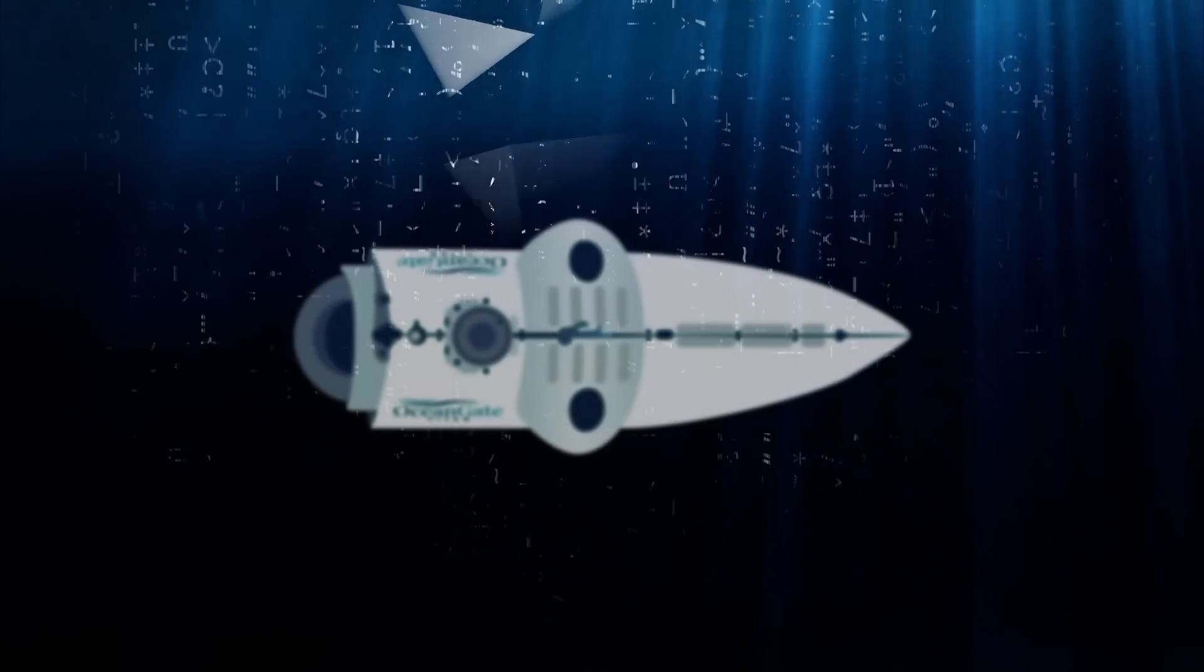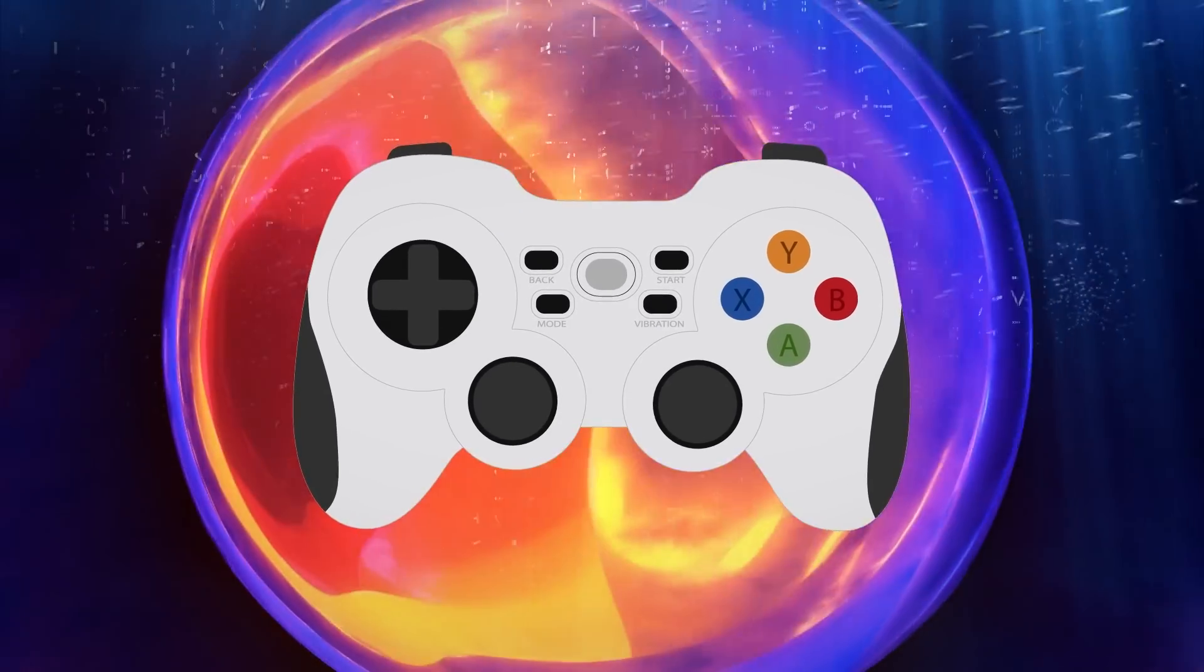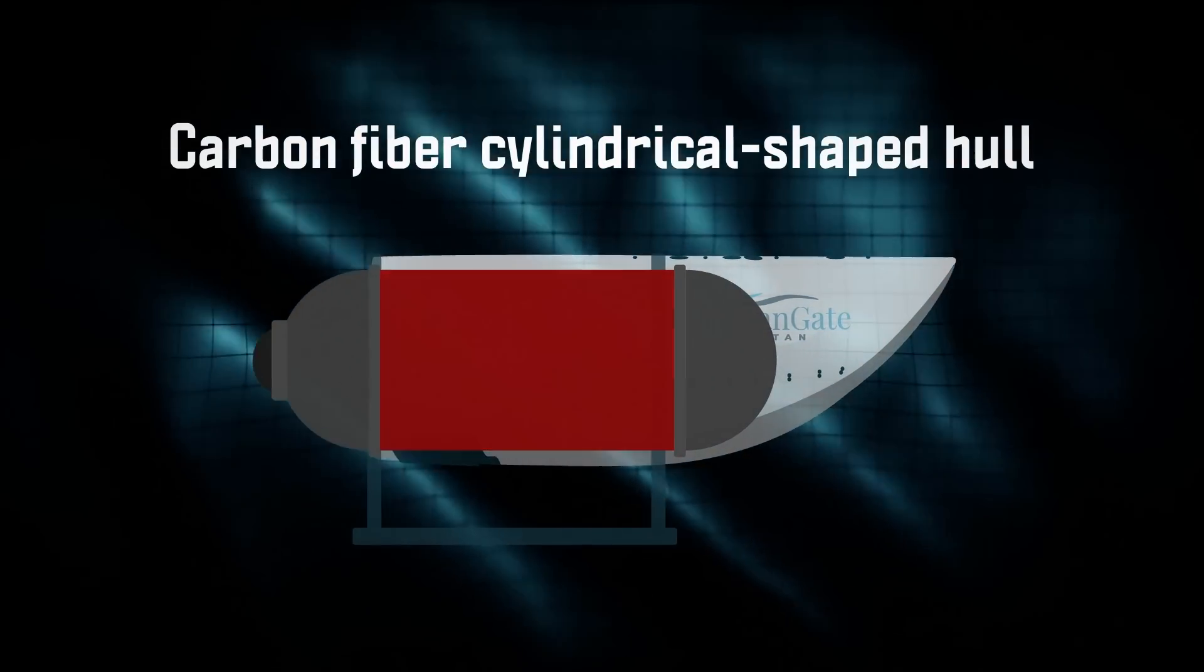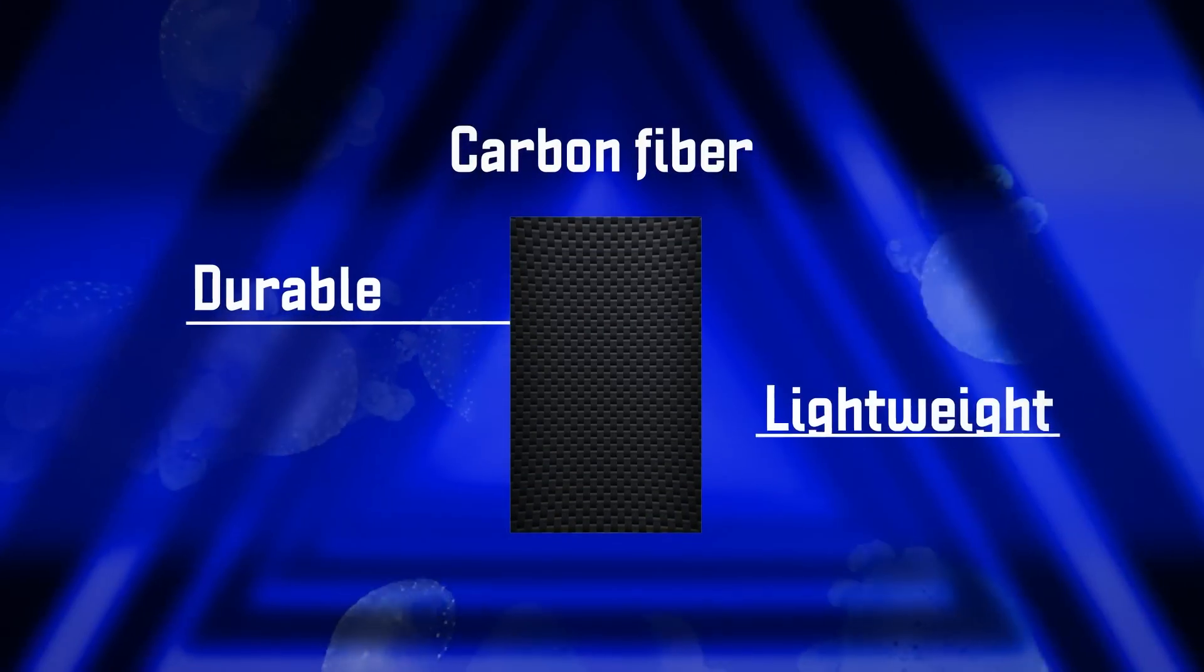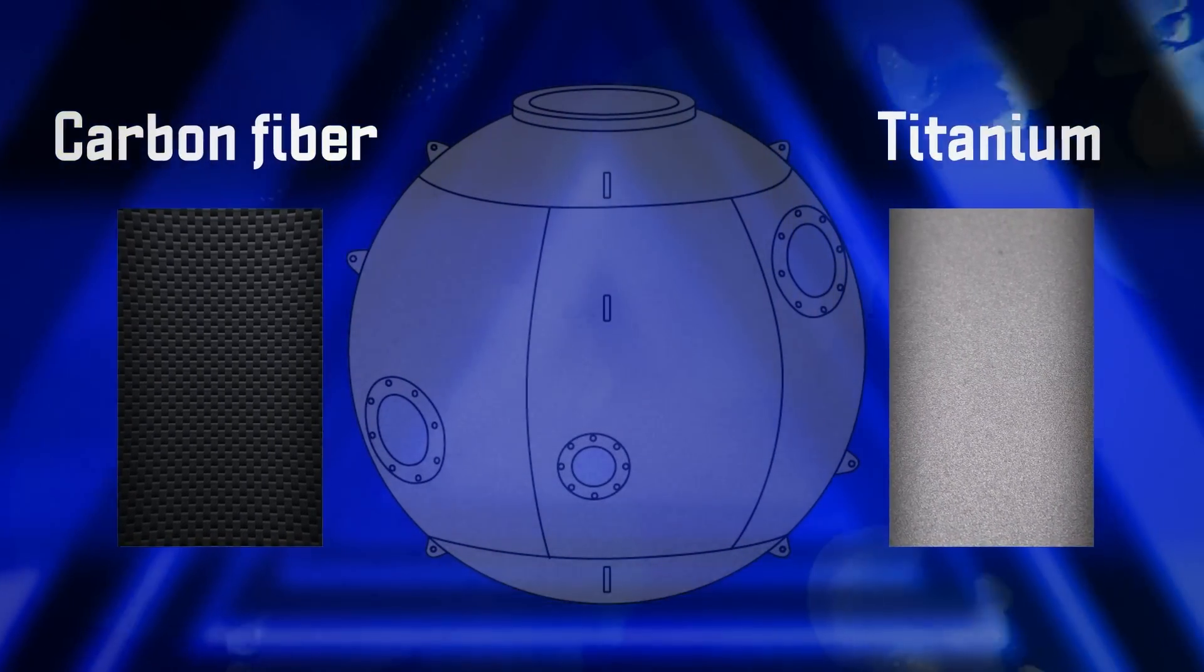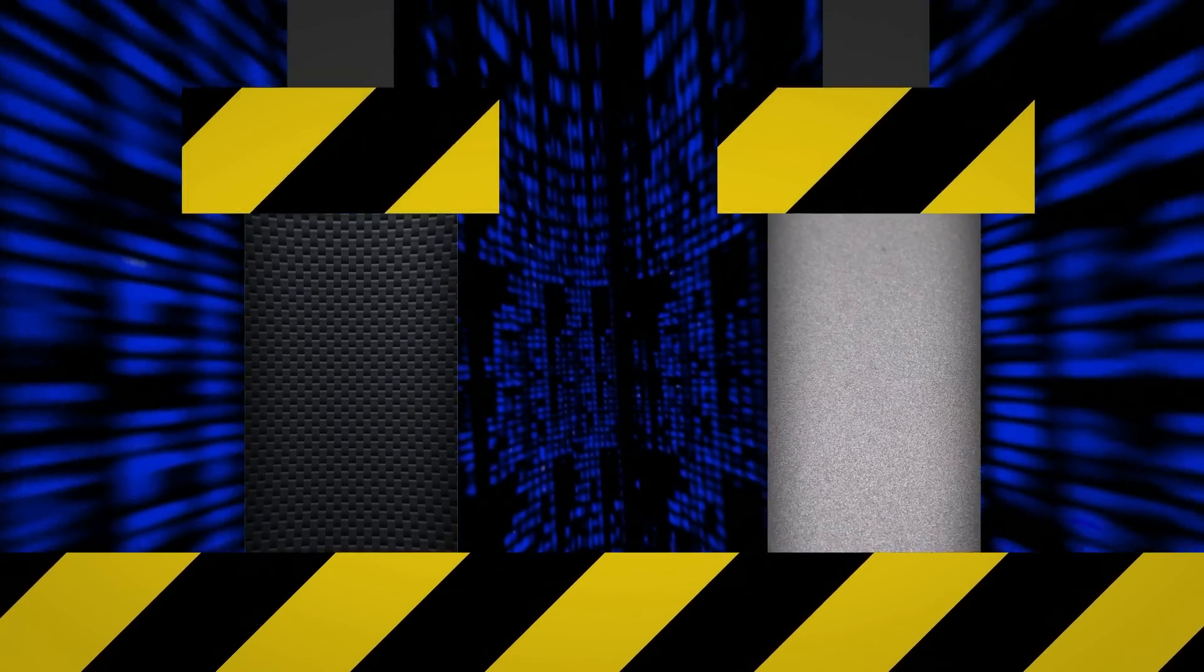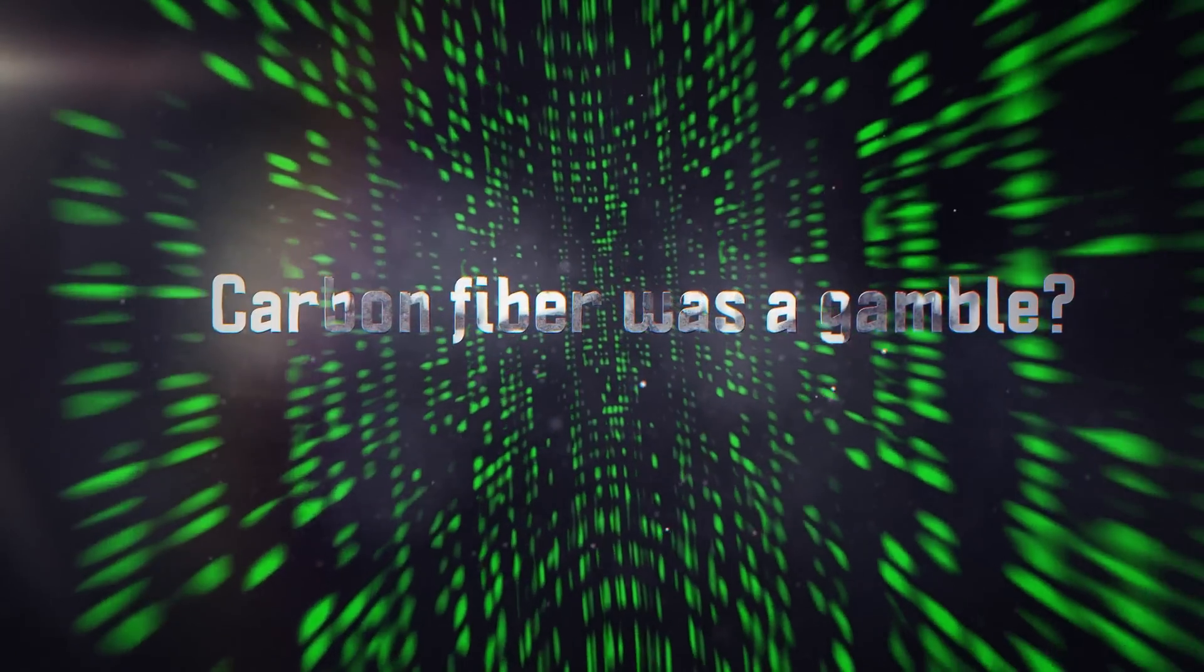Several things about Titan were gimmicky. For example, a PlayStation-like controller to maneuver and operate the submersible. The carbon-fiber cylindrical-shaped hull also raised the expert's eyebrows. Why? Here's the short answer. As far as material, carbon fiber is very durable and lightweight. But, compared to titanium, which has been standard for submersibles of this class, there's just not enough research-backed data about its limits. How far can you push it till it breaks? What should be the standard service interval? Many thought that carbon fiber was a gamble.